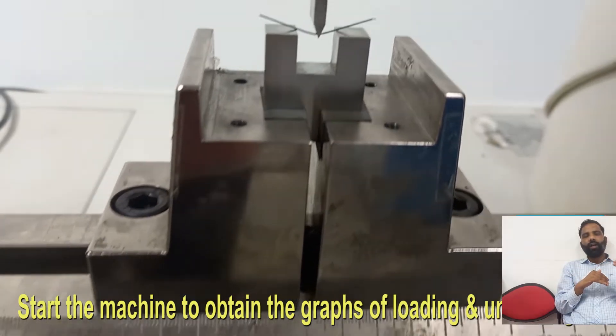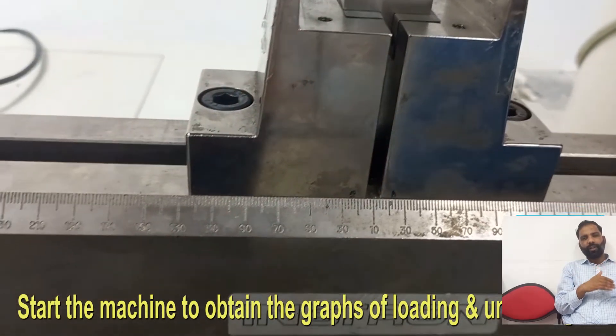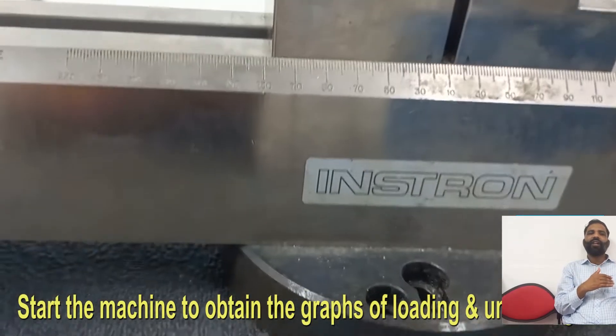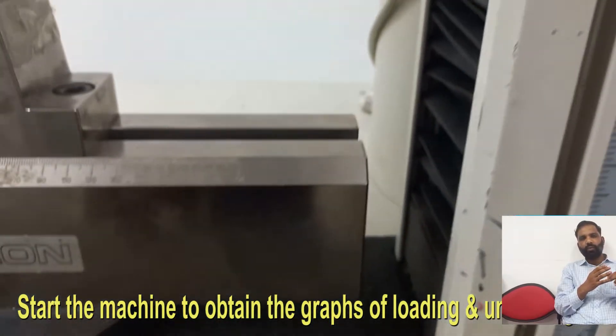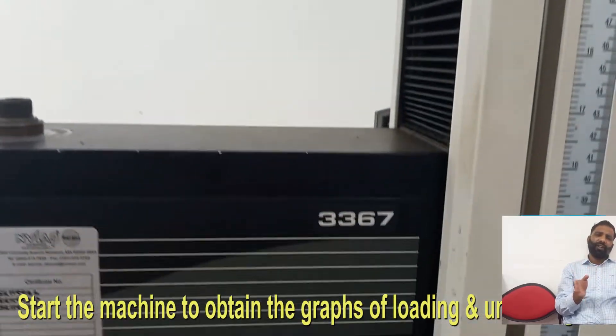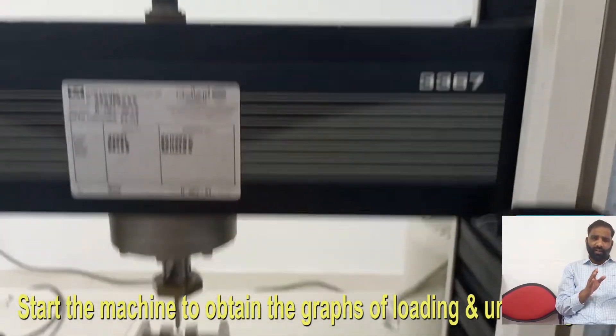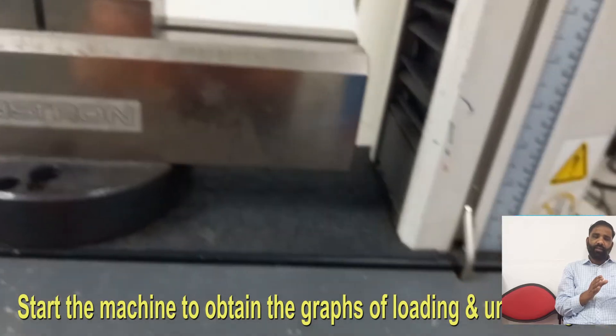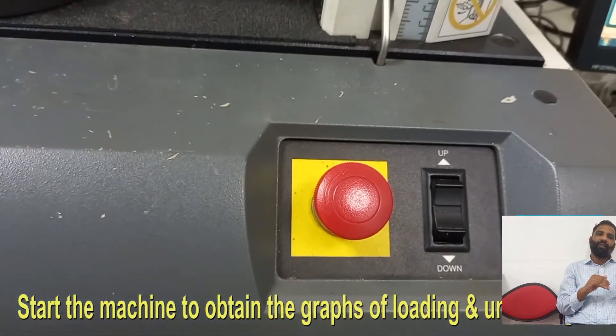According to ISO standard we can perform three-point bending at different deflections from 0.5 mm to 3.1 mm deflection. Normally for the biomechanical properties you can use 3.1.